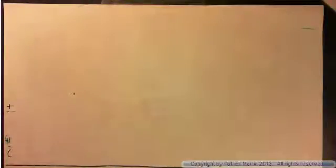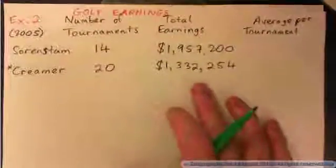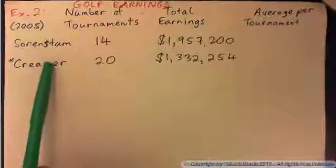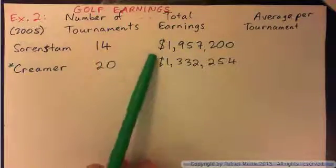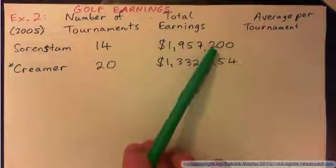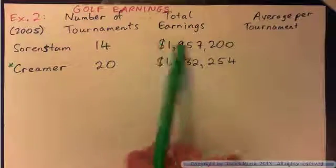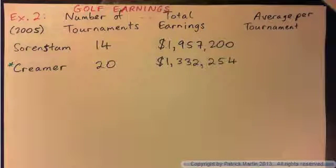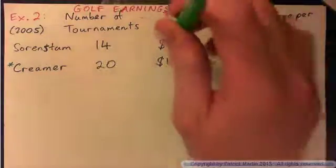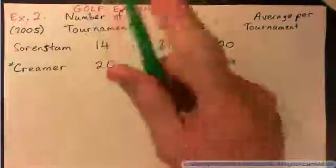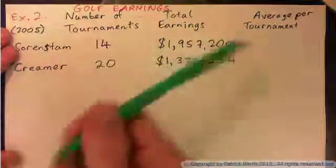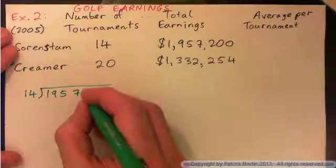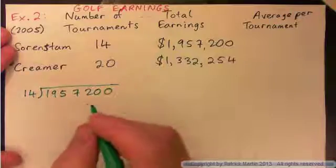Let's have a look at example 2. If we have this situation with golfers — a certain golfer plays 14 tournaments and her total earnings is this amount. How much does she earn on average in one tournament? Wouldn't it be the total divided by 14? That would give you the average. So it would be 14 into 1,957,200. Please press pause and do that yourself.